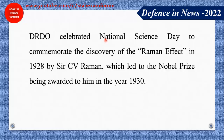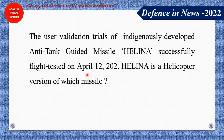DRDO celebrated National Science Day to commemorate the discovery of the Raman Effect by C.V. Raman, which led to him being awarded the Nobel Prize in 1930. On which day is National Science Day observed? It is observed on 28th February. Importantly, this day marks the discovery of the Raman Effect — not the birth anniversary of C.V. Raman. Make a note of this as it is a commonly confused point.